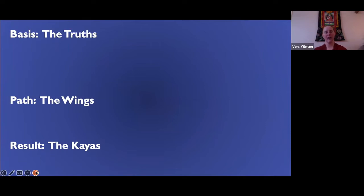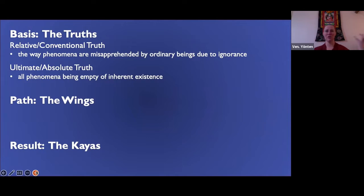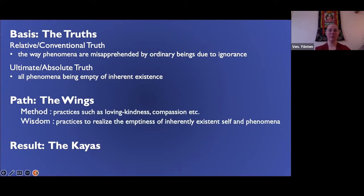The result is the kayas, or the Buddha bodies. The basis: conventional truth and relative truth are things to understand. Relative truth is the way phenomena are misapprehended by ordinary beings due to ignorance. Ultimate truth is all phenomena being empty of inherent existence. It's not like there are two separate truths — there are two ways of seeing truth. Conventional truth is deceptive; the deception comes from our mind conditioned by ignorance.